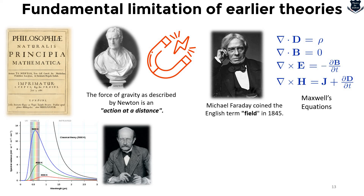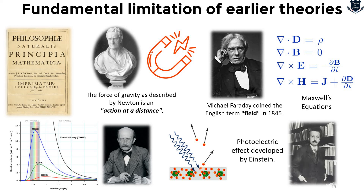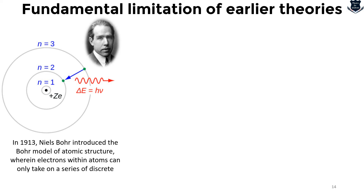Despite the enormous success of classical electromagnetism, it was unable to account for the discrete lines in atomic spectra nor for the distribution of blackbody radiation at different wavelengths. Max Planck's study of blackbody radiation marked the beginning of quantum mechanics — treating atoms as tiny oscillators that absorb and emit electromagnetic radiation. Building on this, Albert Einstein proposed in 1905 an explanation for the photoelectric effect: that light is composed of individual packets of energy.